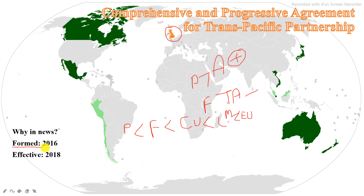This particular trade agreement was formed in the year 2016. When it was signed, the US had also signed this trade agreement. But by the end of 2016, the US withdrew from this agreement. After the US withdrew, the treaty could not come into existence at that time. This particular treaty finally came into force in 2018.